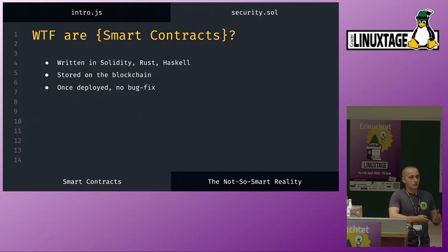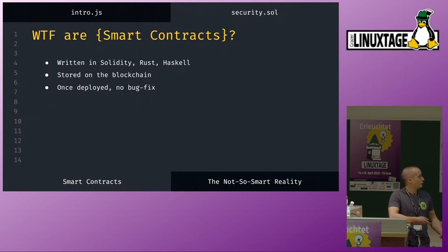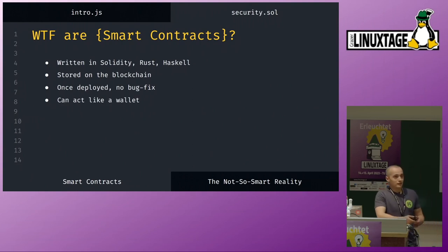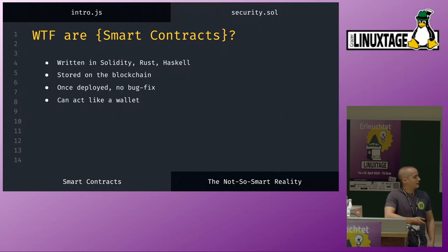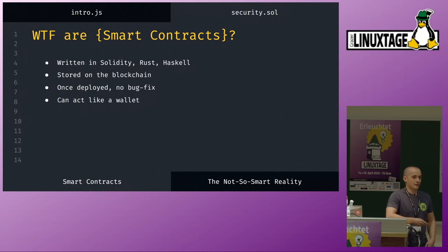That seems to be an issue if you've ever found a security problem in a program and fixed it — which is already hard to do — but if you can't fix it, it gets even worse. An interesting thing that makes this even more attractive to hackers is that a smart contract can act like a wallet. It can have internet money stored inside it — the native coin of the chain you're developing on.